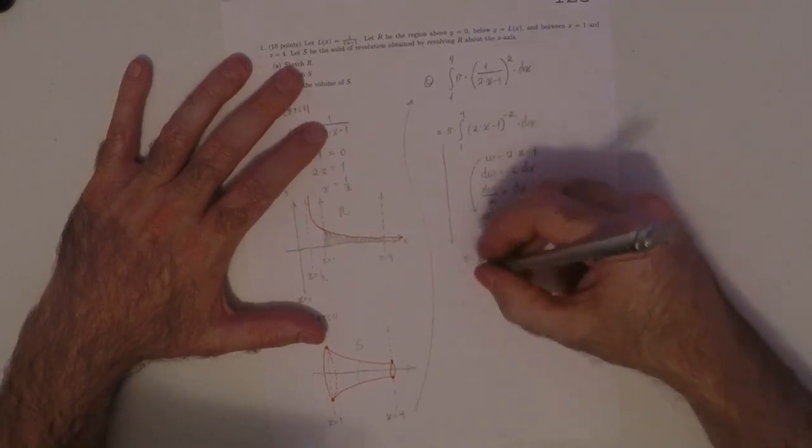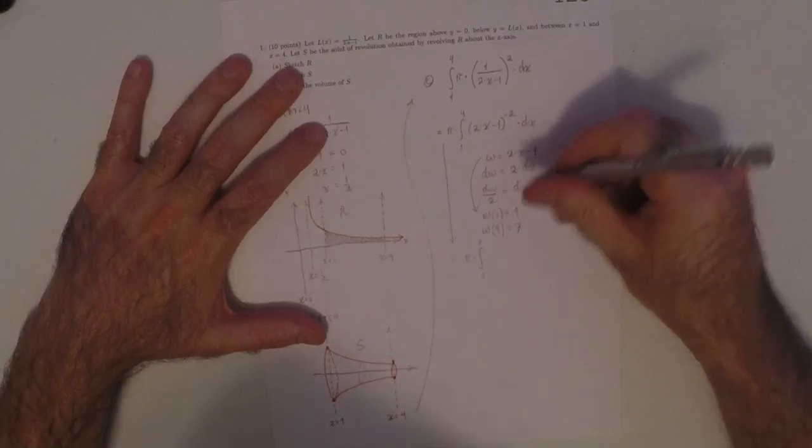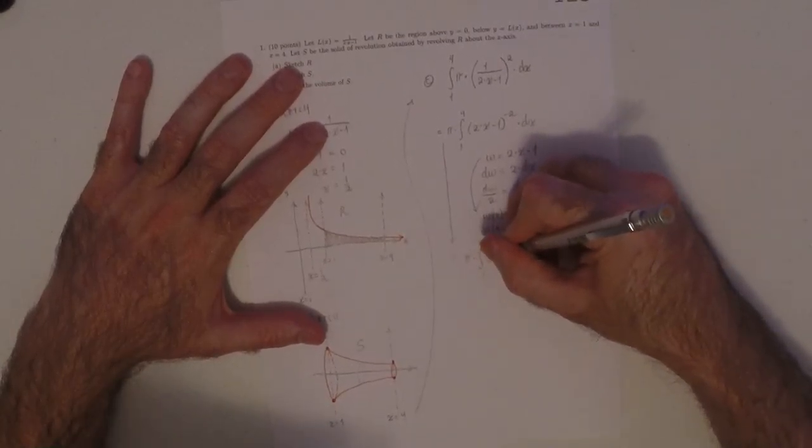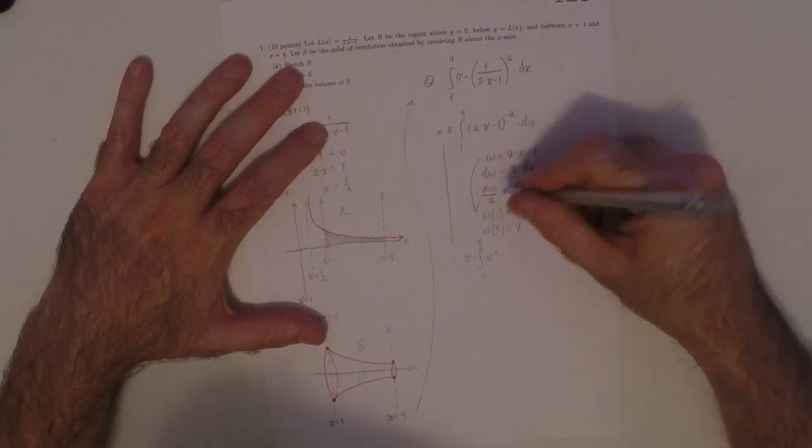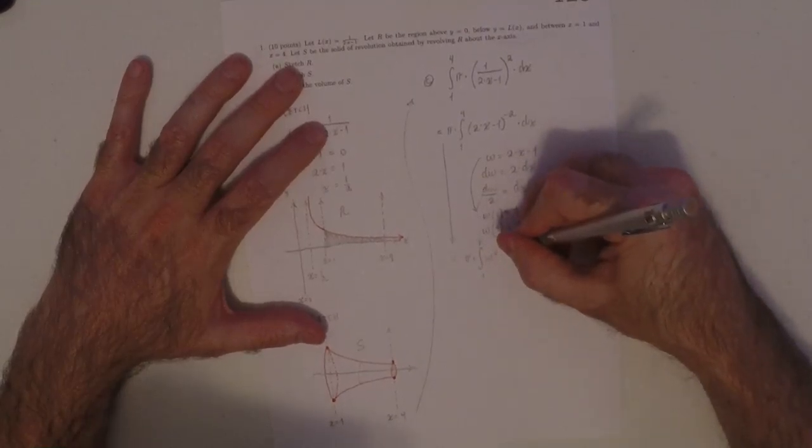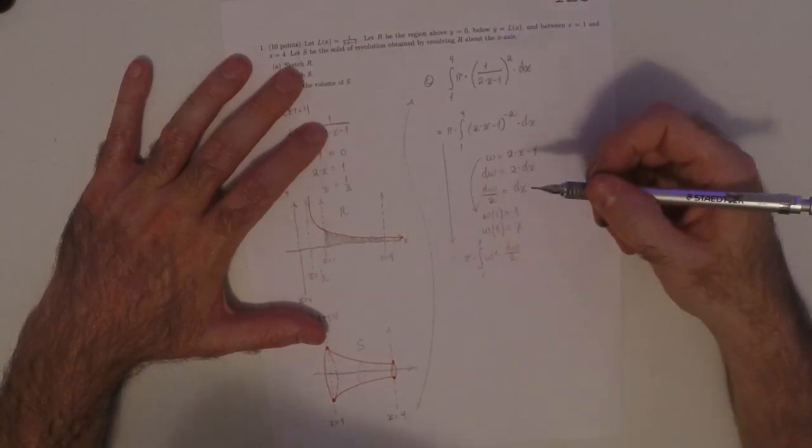Integral 1 to 7. W squared. Then, dx becomes dw over 2.